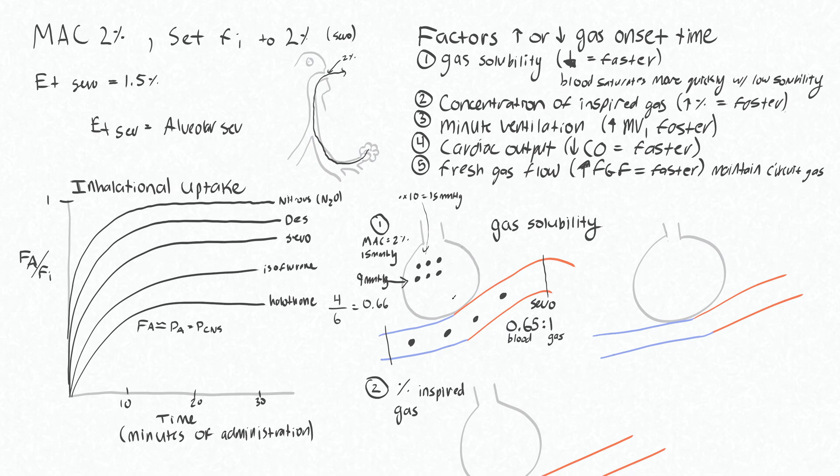So our remaining 6 are going to exert a partial pressure here of 9 millimeters of mercury. And we said that the alveoli is in equilibrium with this blood. That's how the gas dissolved in here. So this is also 9 millimeters of mercury. And then what's being sent off to our brain is blood with the partial pressure of 9 millimeters of mercury. So what's actually getting to your central nervous system here is not the 15 millimeters of mercury required for one MAC. But it'll get there if we give this enough time.